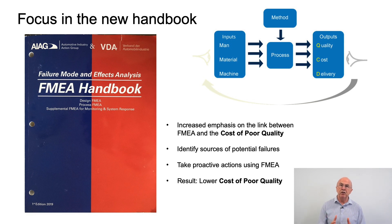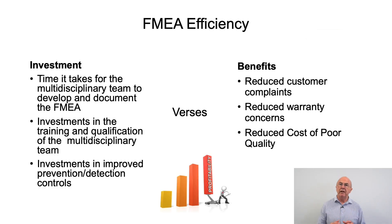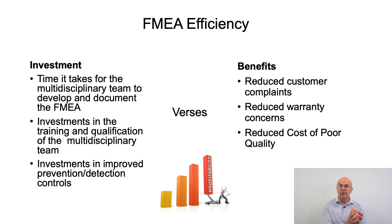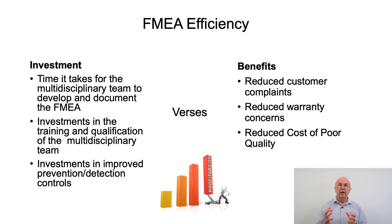If we can convince management and do this effectively, we will get a lower cost of poor quality. To do FMEA correctly takes management commitment in providing the relevant resources for a cross-functional team, but also to make the investments in any improvements in prevention or detection controls driven through the FMEA process. Management need to compare — I've made that investment, what benefits am I going to get? Hopefully benefits in reduction in customer complaints, reduction in warranty concerns, and reduction in the cost of poor quality.